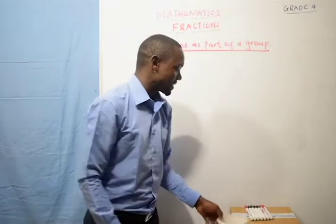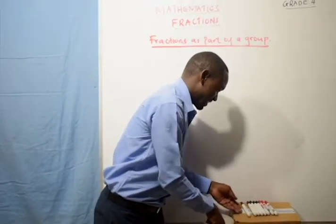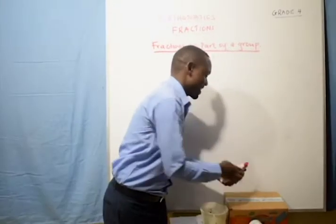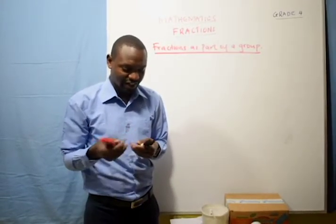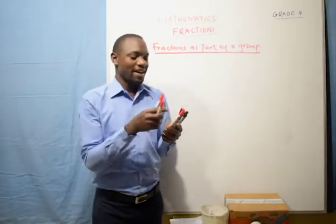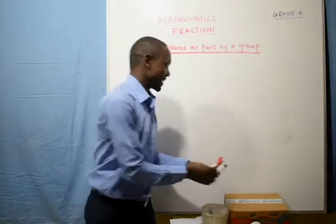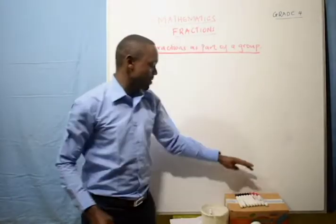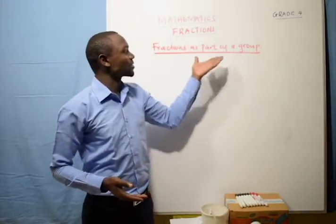Let's have nine pens — one, two, three, four, five, six, seven, eight, nine. We have nine pens whereby six of them are black and three are red. So we have three red pens and six black pens, and we are representing fractions as part of our group.